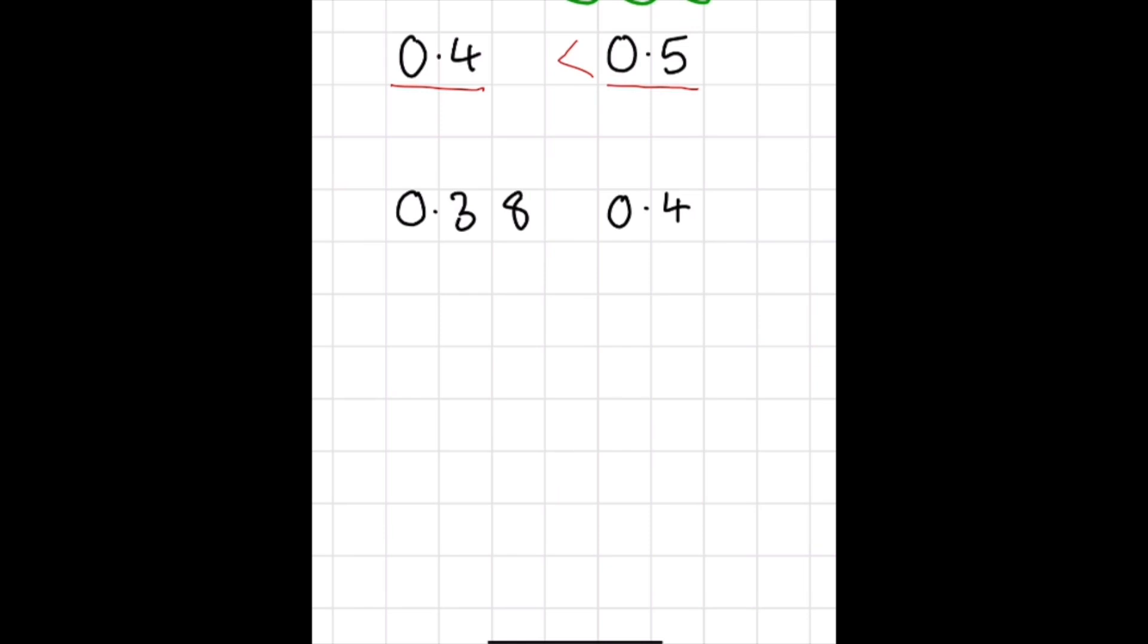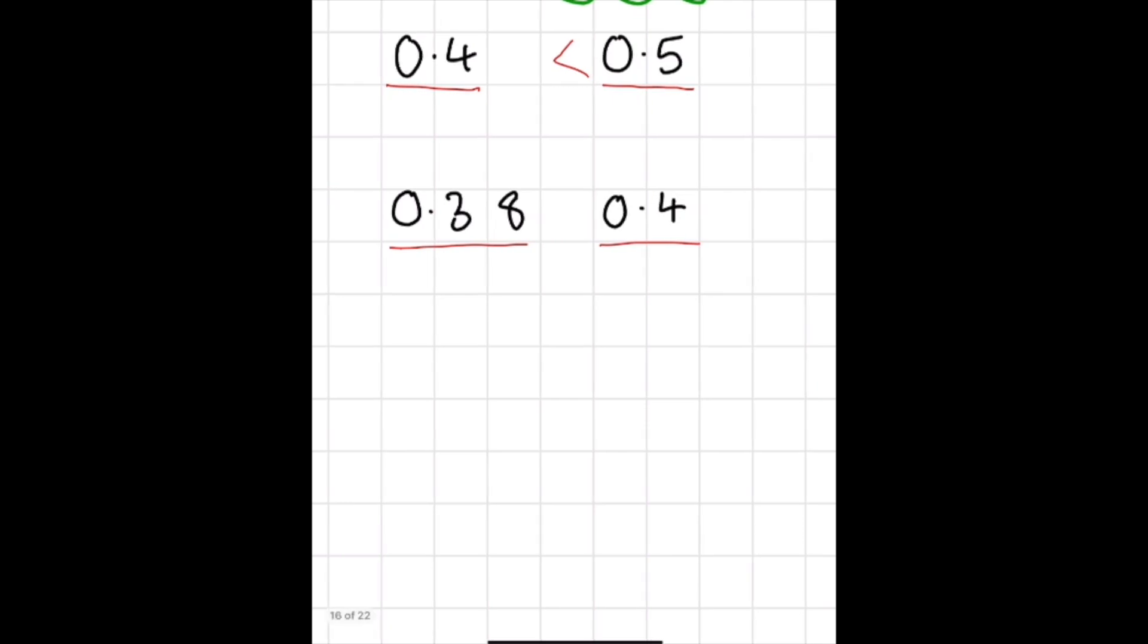Again when it comes to the tenths and hundredths and the tenths we are showing the children that the tenths is the same as the hundredths as zero would go in the hundredths column. So we'd only be comparing 0.38 and 0.40 and again as 40 is closer to the whole 0.40 would be the bigger number. This is something we're trying to get the children to understand that just because this number may be bigger does not mean that the decimal is actually larger.